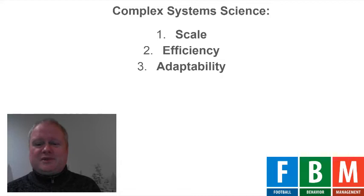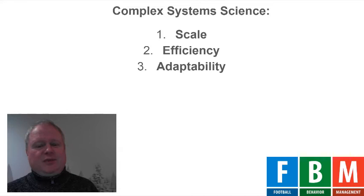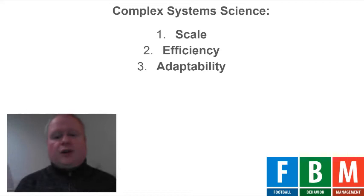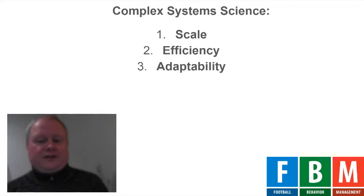For complex system science, we only use a very small part — basically the claim that there are three prerequisites in order to deal well with complexity: you have to be able to scale, you have to be efficient, and you have to be able to adapt to new and different circumstances. All three can be easily explained in terms of football. Scale is easy to understand — if you have a team that consists only of individuals who don't work together, the probability of those 11 individuals winning against a well-formed team where all players work together is extremely small.